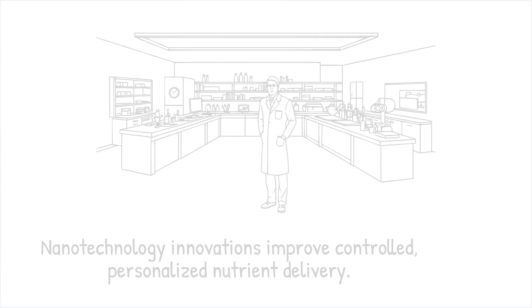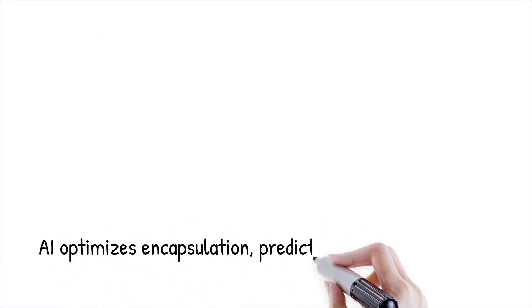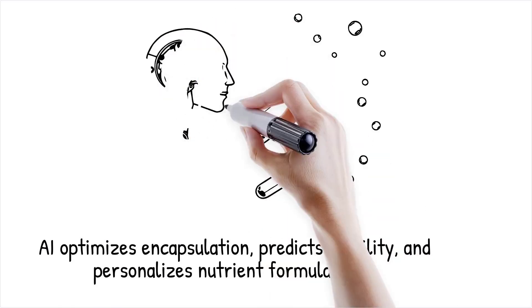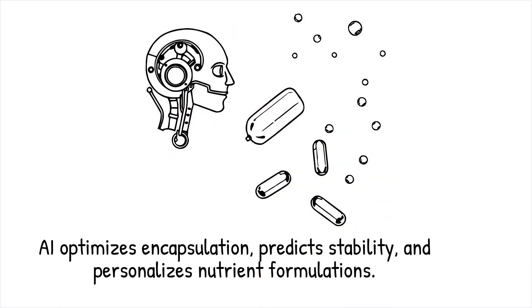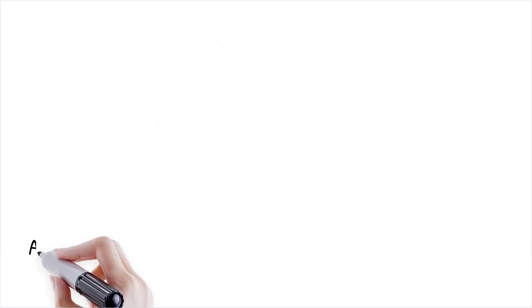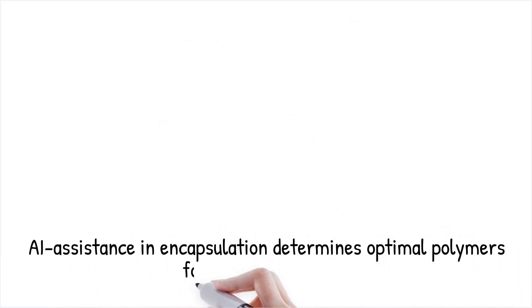Artificial intelligence optimizes encapsulation by predicting stability, enhancing bioavailability, and personalizing nutrient formulations. Machine learning models analyze large data sets to refine encapsulation techniques and improve controlled release efficiency. AI-driven innovations are accelerating the development of next-generation nutraceutical delivery systems.